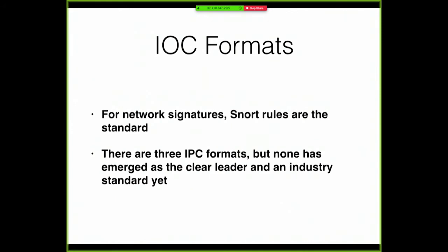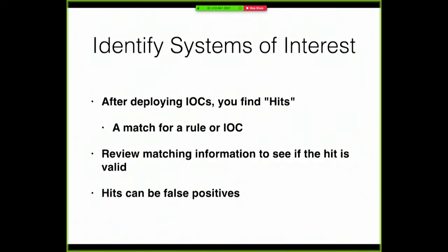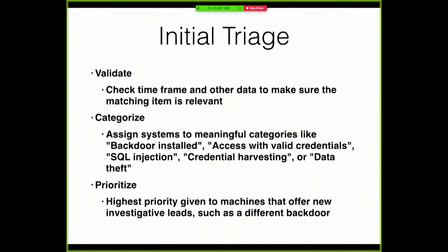Snort rules are the standard for network signatures — Snort is about 15 years old and has become the standard way to specify network traffic patterns. There's no clear leader yet in the file forensic space. When you deploy IOCs and send queries over the network asking every machine if it has these files, registry keys, and such, you get hits — machines that have some of your indicators and are potentially part of the attack. Then you have to evaluate your hits because your rules are not perfect; some machines may match an IOC without really being part of the attack.